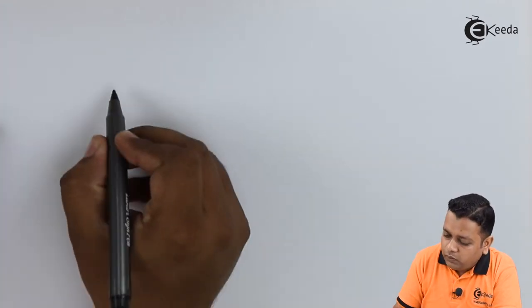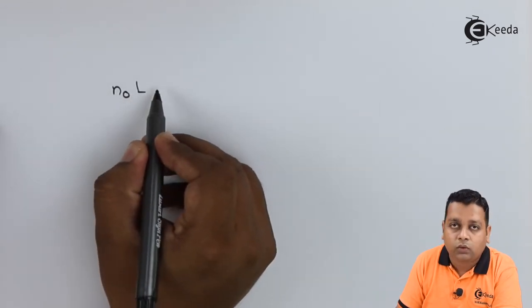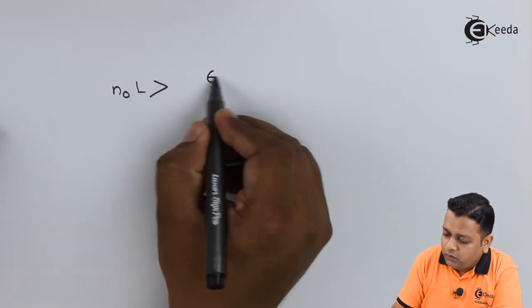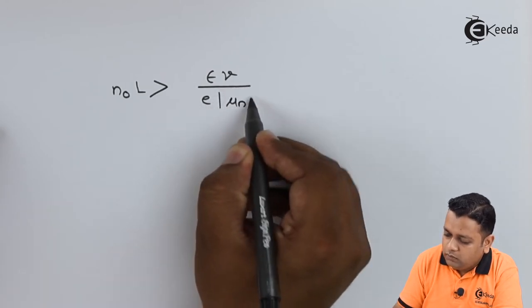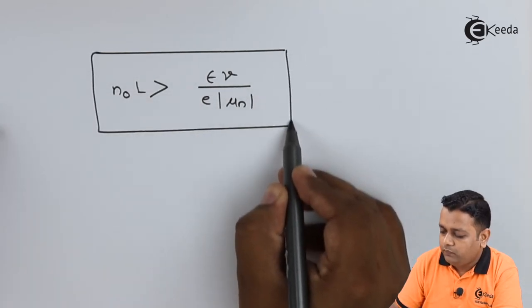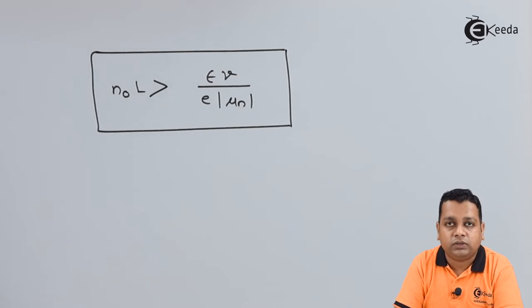The criterion for classification of various modes of the Gunn diode is that the product of doping concentration n₀ and the length L must be greater than ε·v / (e·|μₙ|). This is the very important criteria used to classify the various modes, and this formulation is also helpful when solving problems based on this device.